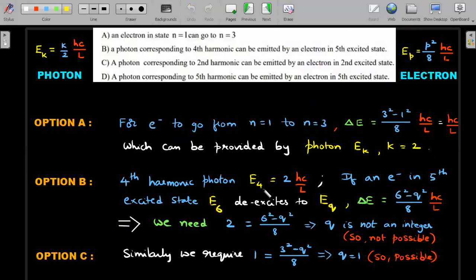We'll go to the options. I have written the photon expression here and electron expression here. In option A, he says electron from its first energy state to the third energy state. It can only go if a photon of certain energy difference is available.